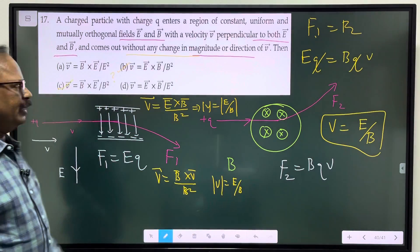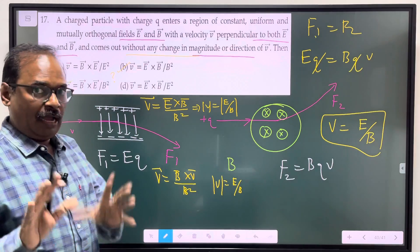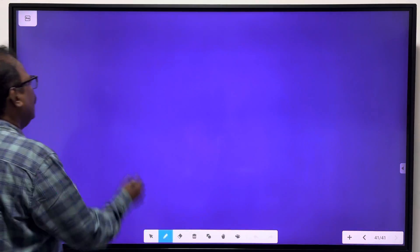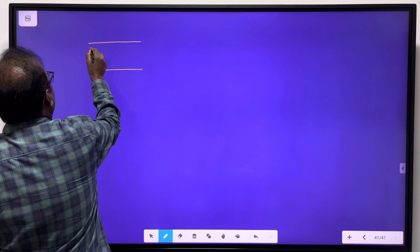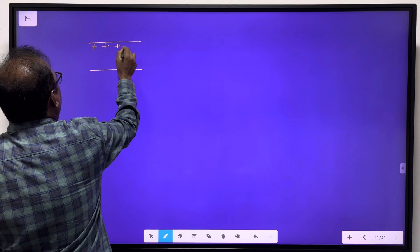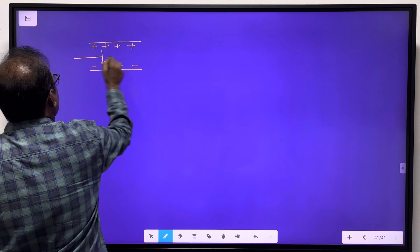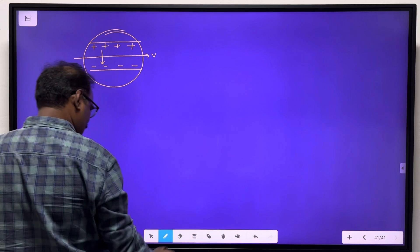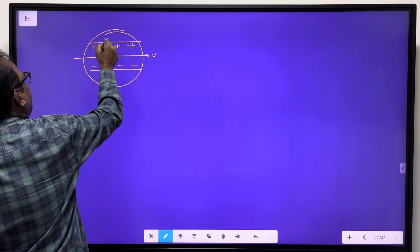We have to have some more clarity on this. Let me redraw the configuration. The velocity and magnetic field directions.